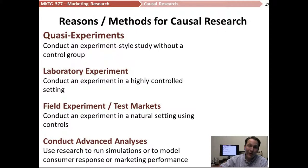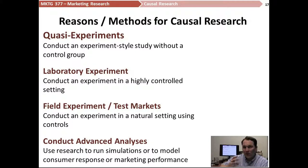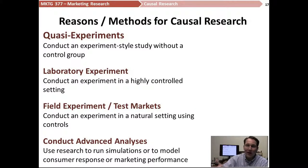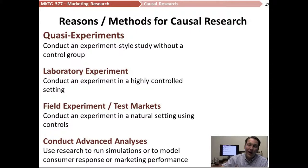Quasi-experiments are when we conduct an experiment but we have no control group. For example, if I want to test my candy bar sales, I can move my candy bars up to the front of the store and just see if customers buy them more — with no control group to compare against, no pre-test and post-test. I just move my candy bars up to the front and see if people are buying more of them. And if they do, I assume candy bars sell better in that position.